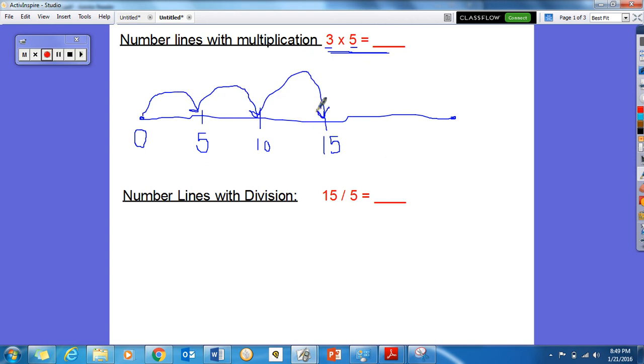Now remember, we draw our hops going forward because the number becomes greater when we multiply. So when we're skip counting by 5s and we have 3 hops, 1, 2, 3, our product is 15. So 3 times 5 is 15.